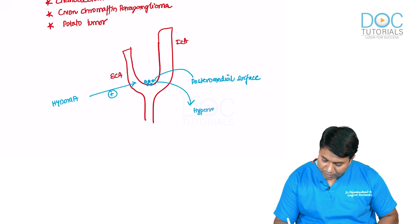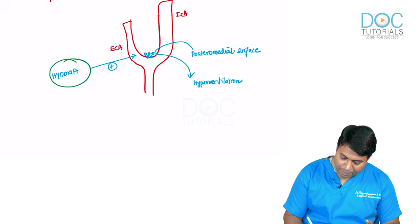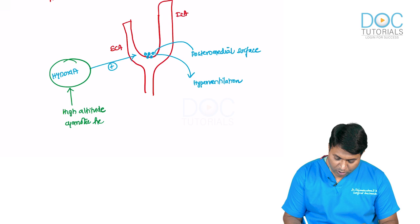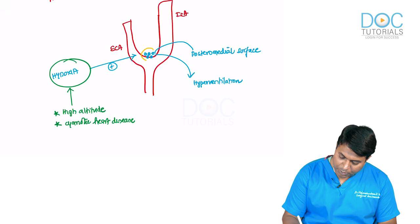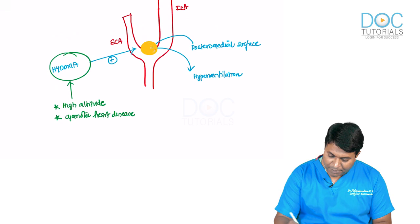When there is hypoxia, these receptors are stimulated and cause hyperventilation. Some patients have constant hypoxia — for example, people living at high altitude and those with cyanotic heart disease. These individuals have persistent hypoxia, their carotid body is continuously stimulated, and it grows to become a tumor. High altitude and cyanotic heart disease are important etiologies.